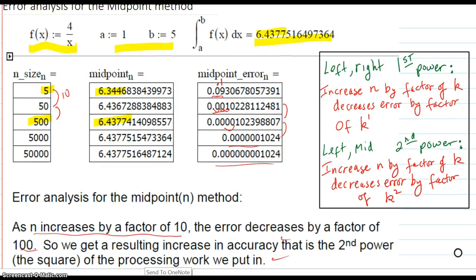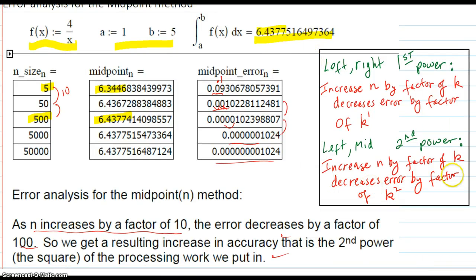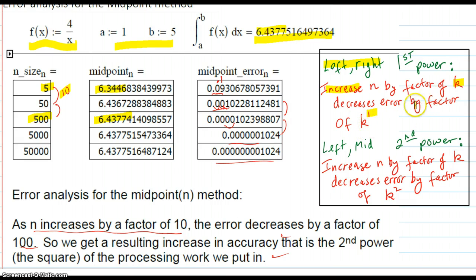I've written down in a box here what we have so far for these methods. The left and right methods are first-power methods, meaning that if you increase the n size by a factor of k, that decreases the error by a factor of k to the first power. We've been using factors of 10, but in some problems we might go up by a factor of 6, and then the error decreases by a factor of 6.